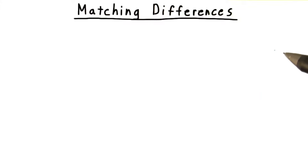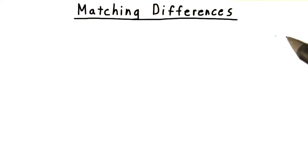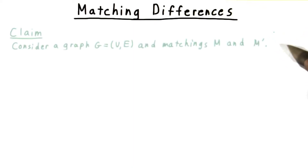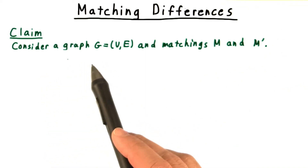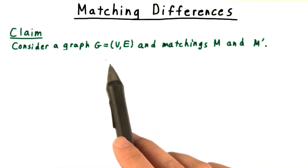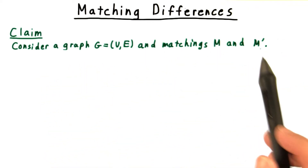Our first step in the proof is to understand the difference between the maximum matching that the algorithm finds eventually, and the intermediate matchings that the algorithm produces along the way. Although actually, we'll state the key claim in terms of two arbitrary matchings, m and m prime.